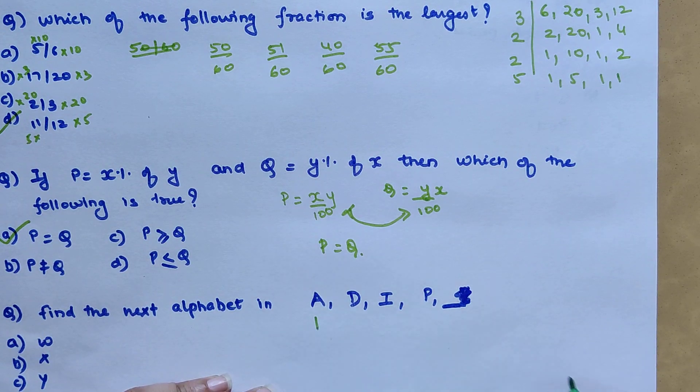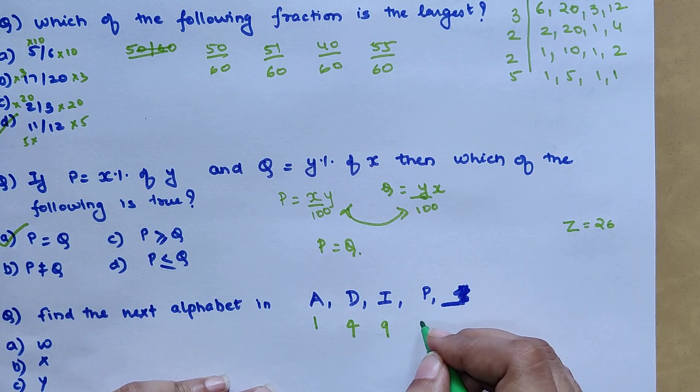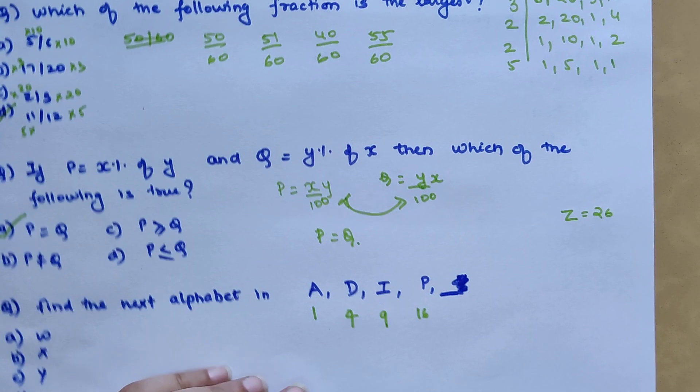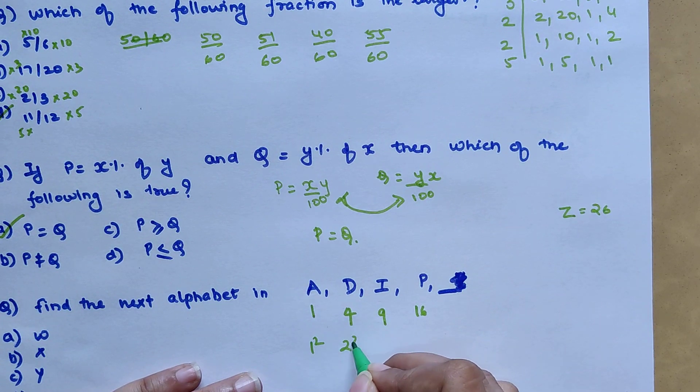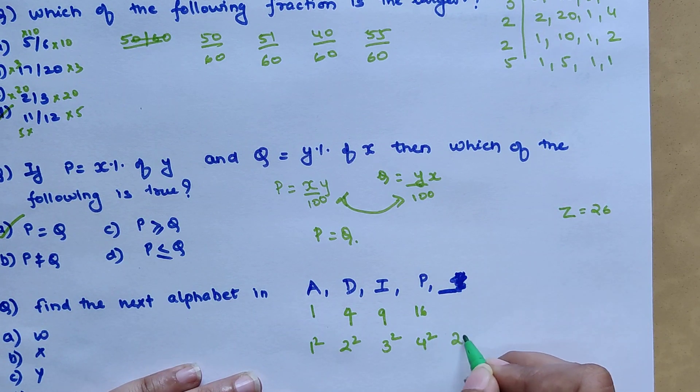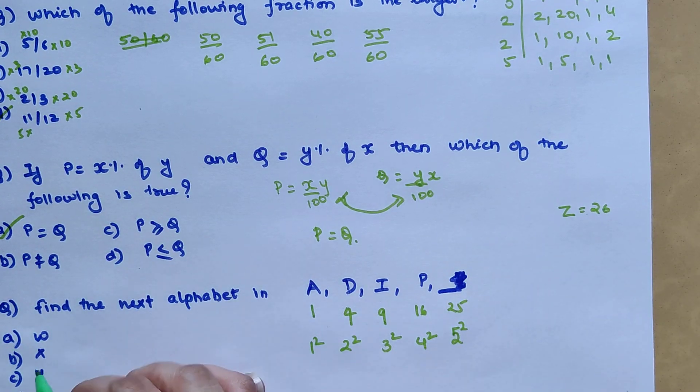Whenever you have alphabets, they are associated by numbers also. In numerical method we can say A is nothing but my first number, similarly Z will be my 26th number. So D will be 4th number, I will be 9th, and P is my 16th number. There are few alphabets you need to remember such as A, E, then J, then O. Now if you look over here, this is one square, this is two square, this is three square, this is four square.